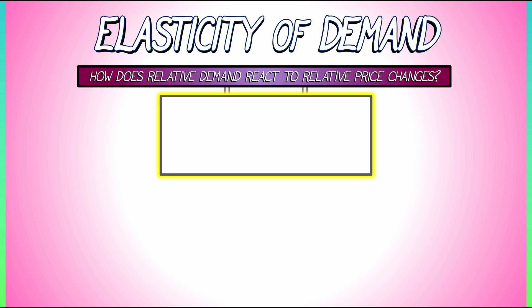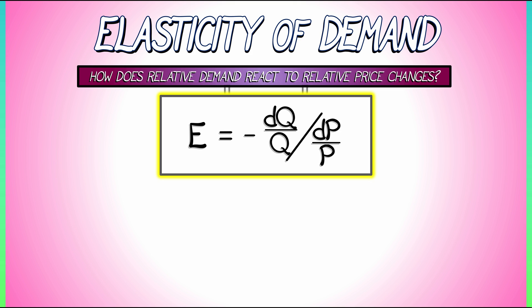The elasticity of demand, denoted E, is defined to be minus dq over q divided by dp over p, where q is quantity and p is price. We have these relative rates of change — these percent changes — with a minus sign out front because price and quantity demanded are inversely correlated to one another, so that the elasticity E is positive.